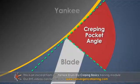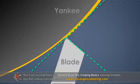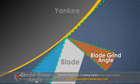Crepe pocket angles typically range from 65 to 95 degrees. It is interesting to note that during production, the creping angle is actually determined by the blade wear angle and the blade grind angle.